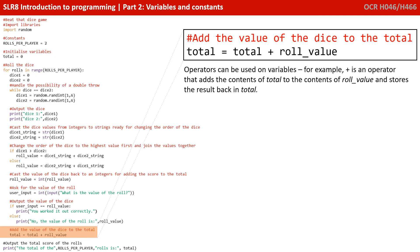So here we see an example of an operator. Total equals total plus role value. And operators can be used on variables and constants. So with this plus symbol, we are adding the contents of total to the contents of role value. And then the result of that calculation is being stored back over the original contents of total. Now the topic of arithmetic operators is covered in more detail in a later video, so we won't look at other examples now.